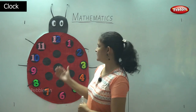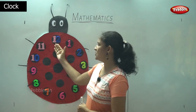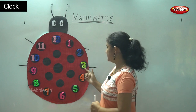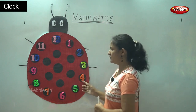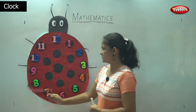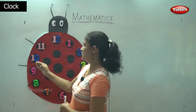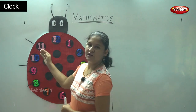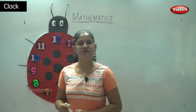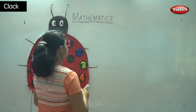As we have already seen, we have seen the numbers: 12 o'clock, 1 o'clock, 2 o'clock, 3 o'clock, 4 o'clock, 5 o'clock, 6 o'clock, 7 o'clock, 8 o'clock, 9 o'clock, 10 o'clock, 11 o'clock, and 12 o'clock. So I will show you how to write the time.